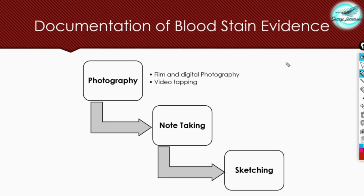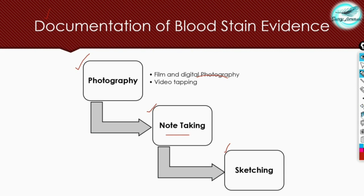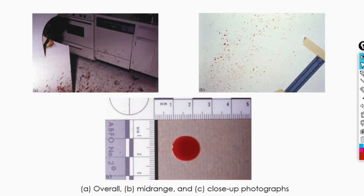Now moving to the second part — documentation. After chemically enhancing the blood stains, we need to record and document them. The documentation procedures used for normal crime scene analysis are also applied to blood stain evidence. We document blood stains through photography, note-taking, and sketching — including digital photography and video recording, along with complete notes recording the positions where suspected stains were found.